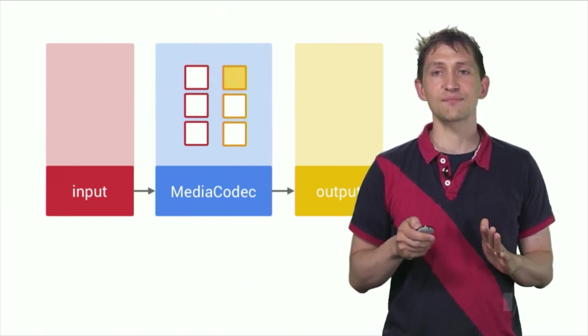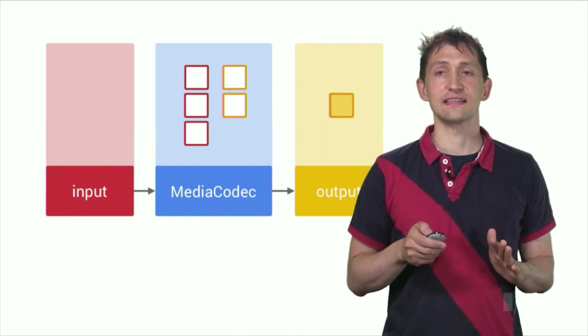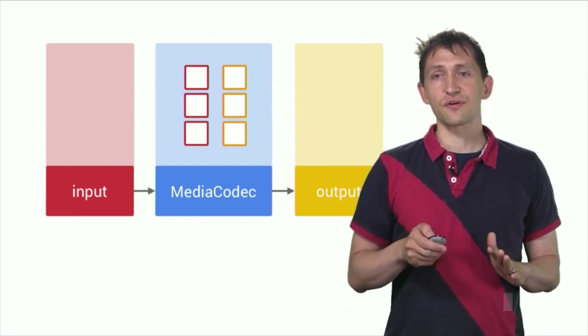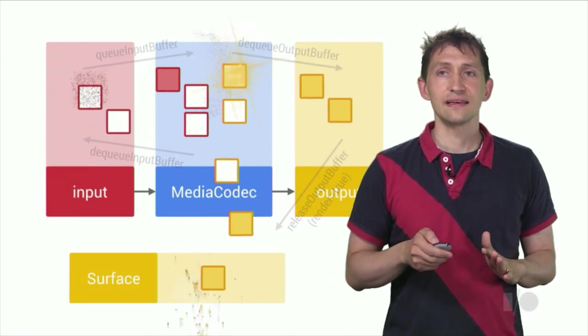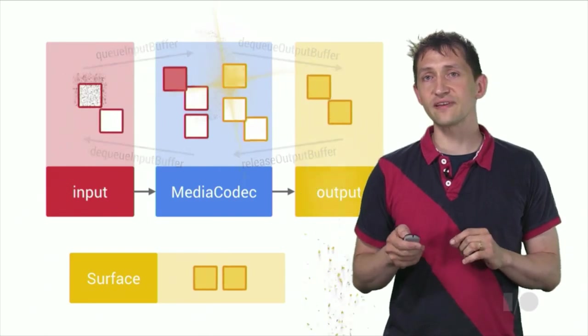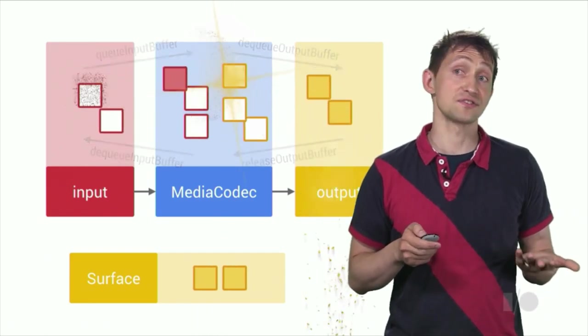Finally, the client requests a filled output buffer, consumes its contents, and sends it back to the codec. The real operation of a codec is a little more complex, as each of these operations is happening in parallel. Also, codecs that produce raw video buffers can be connected to a surface.